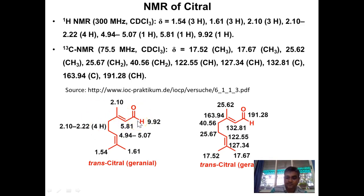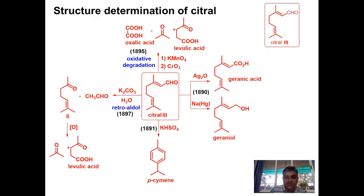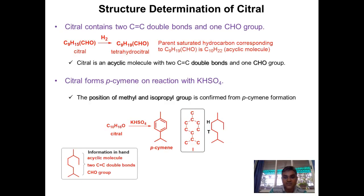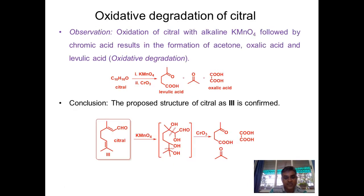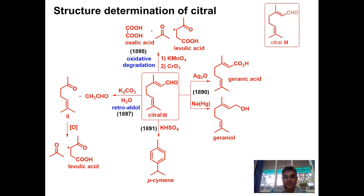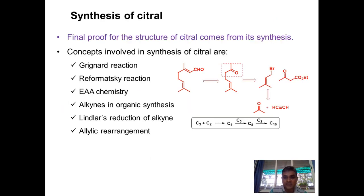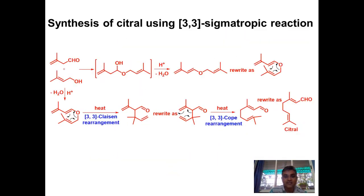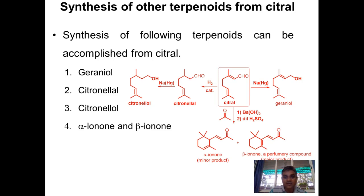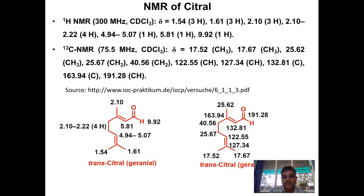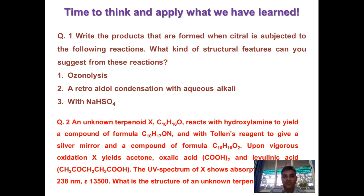In this way we have learned the structure of citral from the beginning — starting with simple experiments like hydrogenation, bromination, oxime formation, para-cymene formation, oxidative degradation, and retro-aldol condensation — to reach the structure. We then confirmed the actual products formed in reactions of citral, dealt with the synthesis using ethyl acetoacetate chemistry, demonstrated the application of sigmatropic reactions in the industrial synthesis, and showed how citral is a starting material for alpha-ionone, beta-ionone, and geraniol. NMR spectroscopy was also discussed. This is all about the chemistry of citral, and the next part covers the question bank on this topic.